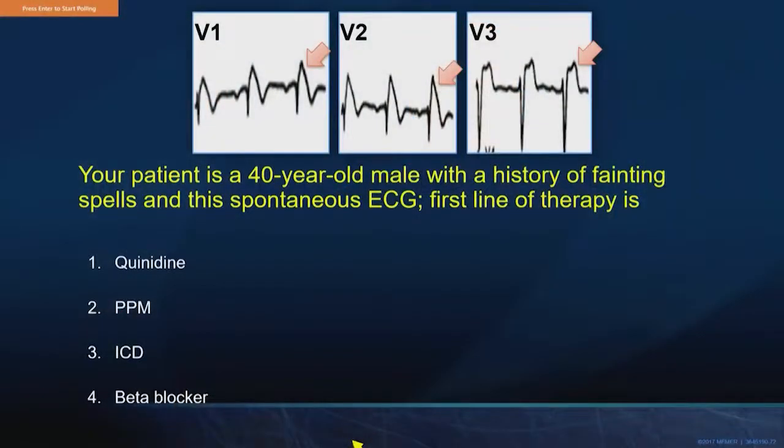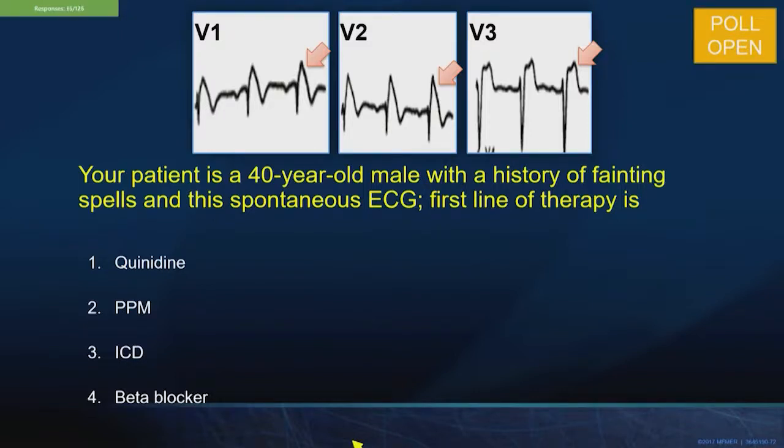A question about autosomal dominant pedigrees: if you have a carrier of an autosomal dominant variant, what proportion of children would you expect to have the gene? Autosomal dominant means 50% transmission risk — half the sperm or eggs would possess the variant. Your patient is a 40-year-old male with a history of fainting spells and a spontaneous type 1 Brugada ECG. What is his first-line therapy in the USA?